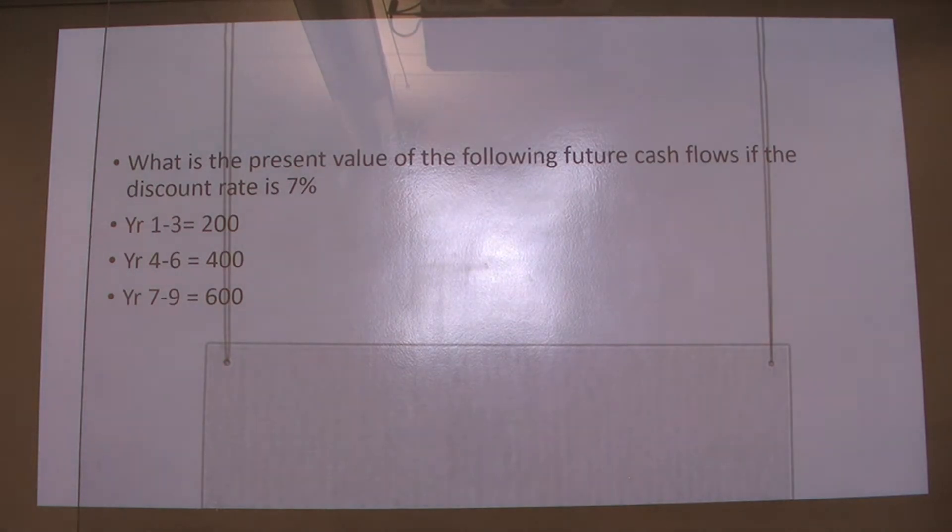So we have years 1 through 3, we get paid $200. Years 4 through 6, we get $400. And years 7 through 9, we get $600.